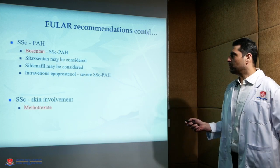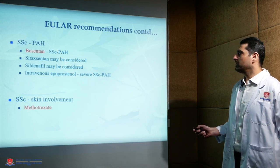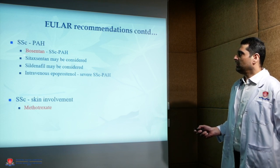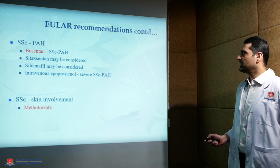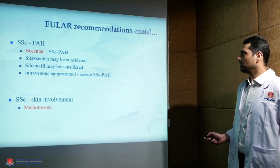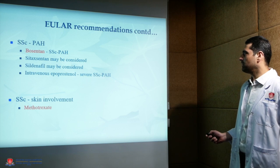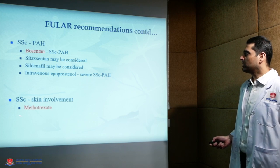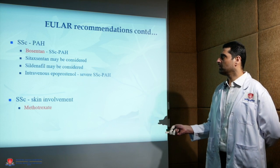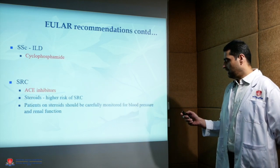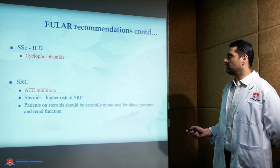For pulmonary arterial hypertension, bosentan is the drug of choice. Sitaxentan and sildenafil may be considered, and intravenous epoprostenol in cases of severe systemic sclerosis-associated pulmonary arterial hypertension. For skin involvement, methotrexate is the drug of choice. In case of interstitial lung disease, cyclophosphamide is advised.